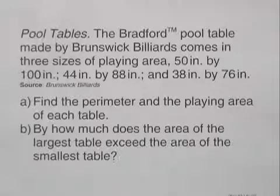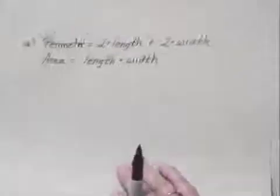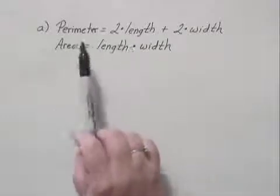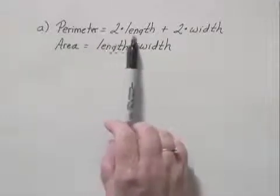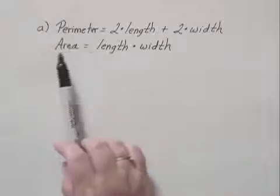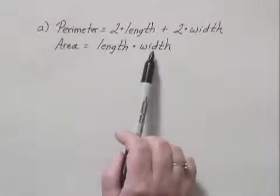For the first part, we can think of what equations we're going to use. We can remember that perimeter of a rectangle is 2 times the length plus 2 times the width, and the area of a rectangle is length times width.